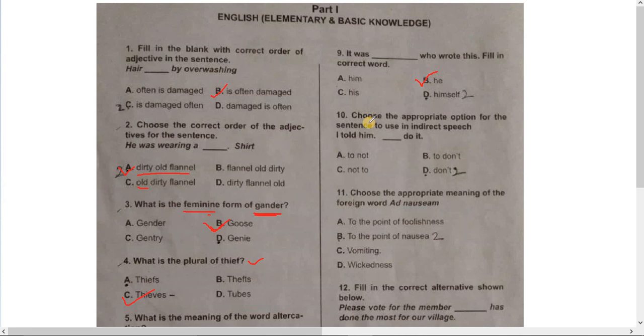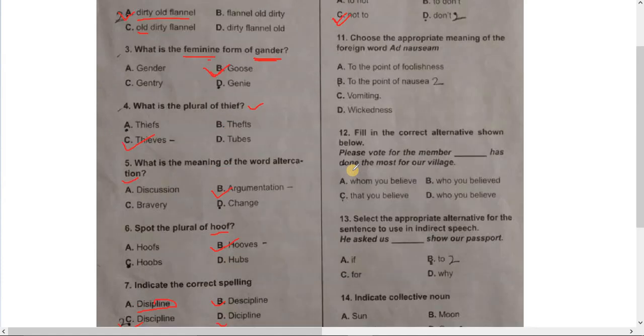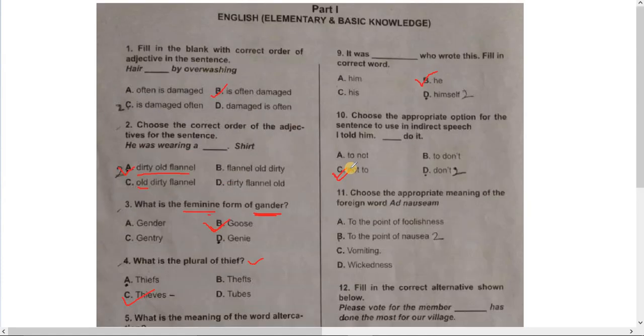Number 10, Number 11. Choose the appropriate option for the sentence to use in indirect speech. I told him... Number A: to don't do it. Number B: not to do it. Number C: don't. I told him not to do it. The correct answer is I told him not to do it.